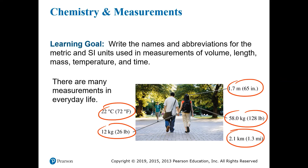You may be surprised to learn that almost every measurement we can make in science can be reduced down to some combination of these basic units of length, mass, temperature, and time. There are a couple of others, but they are more common in physics than chemistry, so we'll forget about those for now.